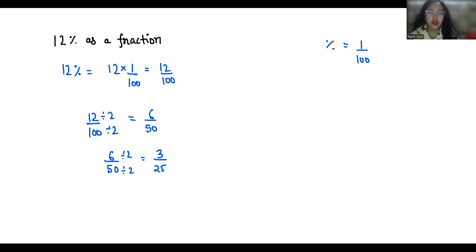So now it comes in lowest fraction form because there is no common factor other than 1. So 12 percent in terms of fraction is 3 by 25.